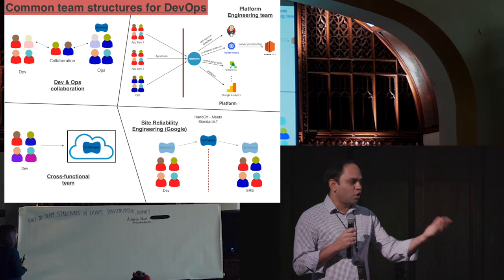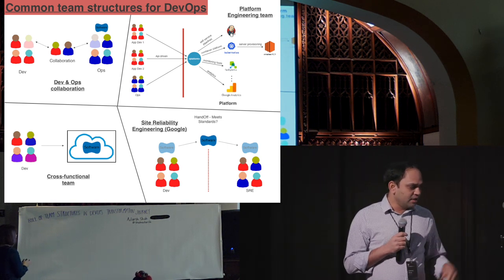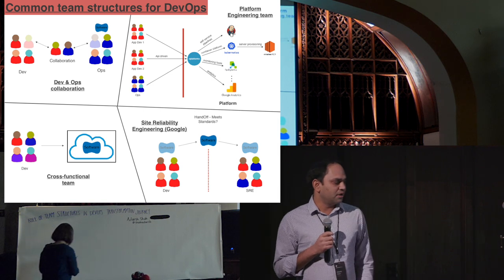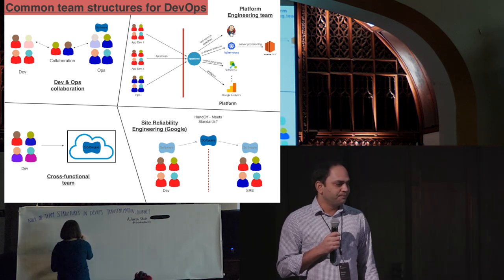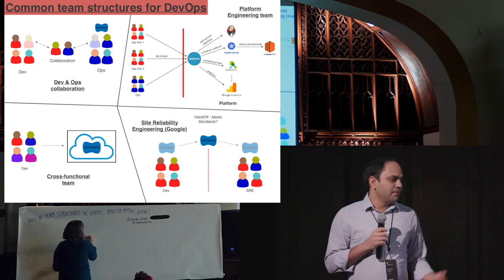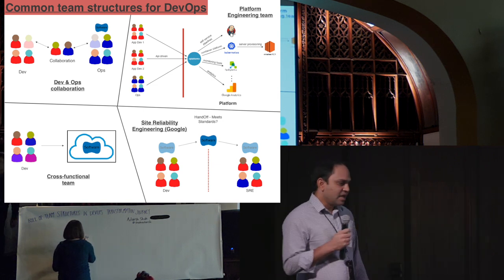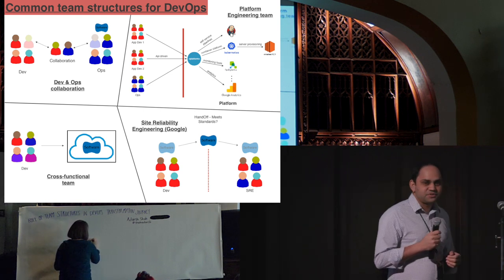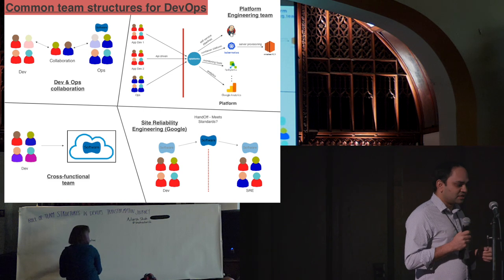These are the four different team structures I'll be talking about today: Dev and Ops collaboration, cross-functional team, site reliability engineering which is the Google model, and the last one being platform engineering team. And we'll see how you can use these different team structures to actually do a DevOps transformation.